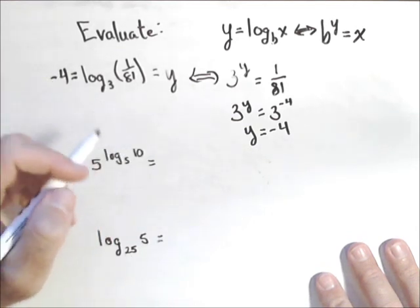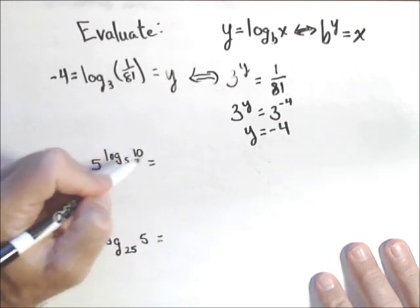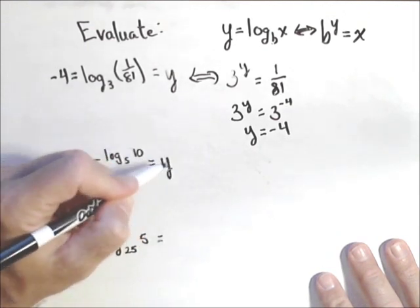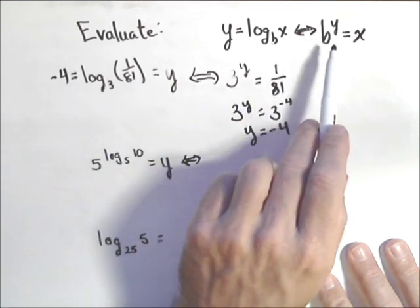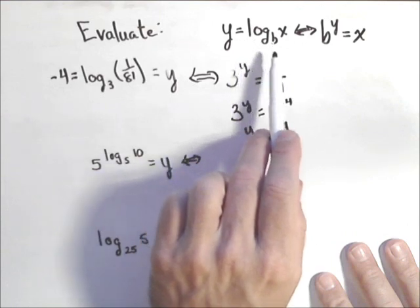Let's try the next one. We can do it the same way, except now we have an exponential. It happens to have a log in it, but it's actually an exponential equation. Now we're going to go this direction—we have this, we want to rewrite it like this.